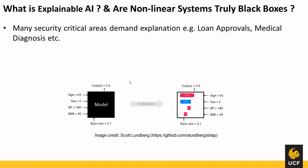If someone's loan approval got rejected, before applying for the next loan they need to know which factor caused the rejection, so that next time that factor can be improved. Many studies have found that many models learn in a clever-Hans fashion.